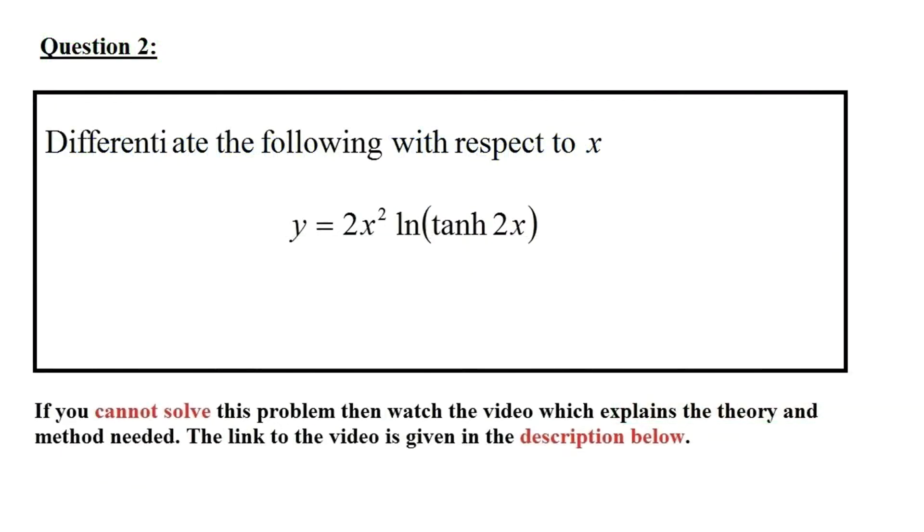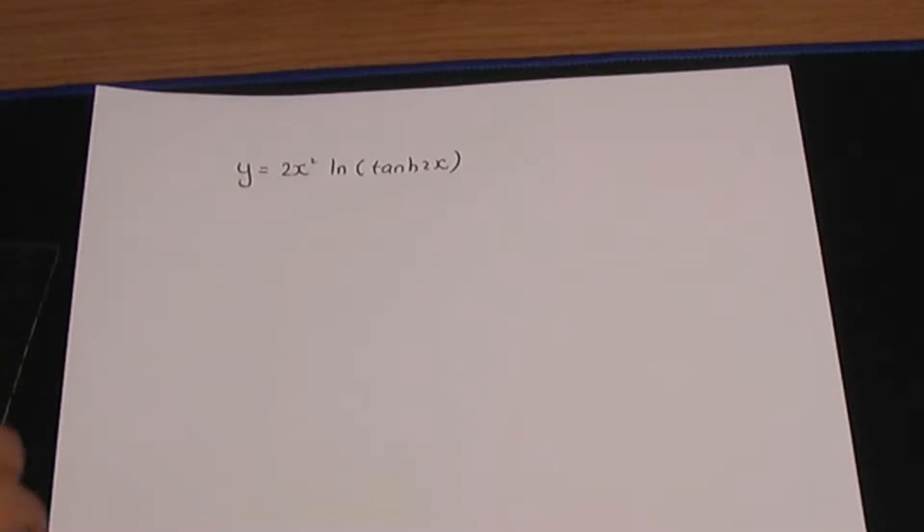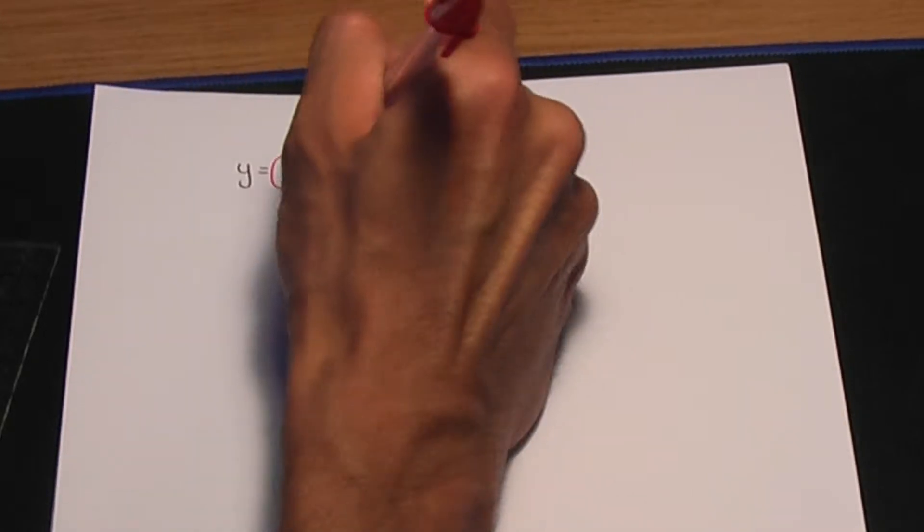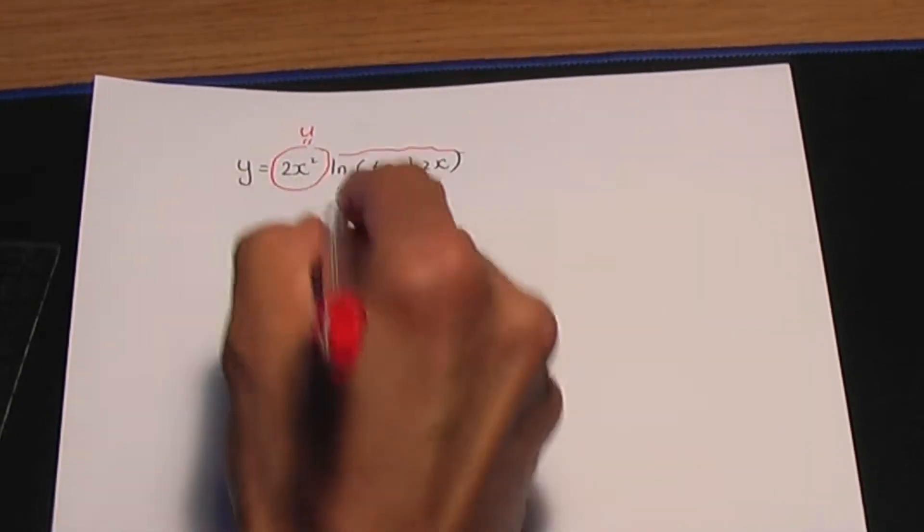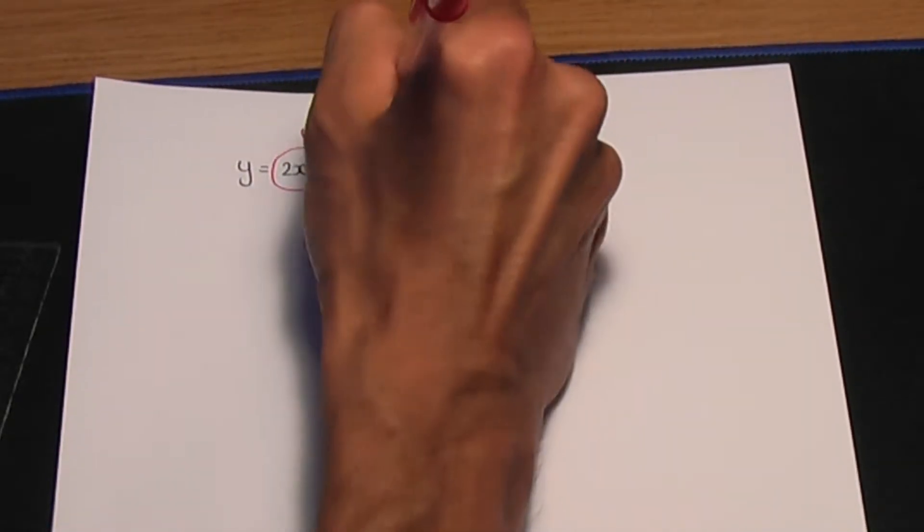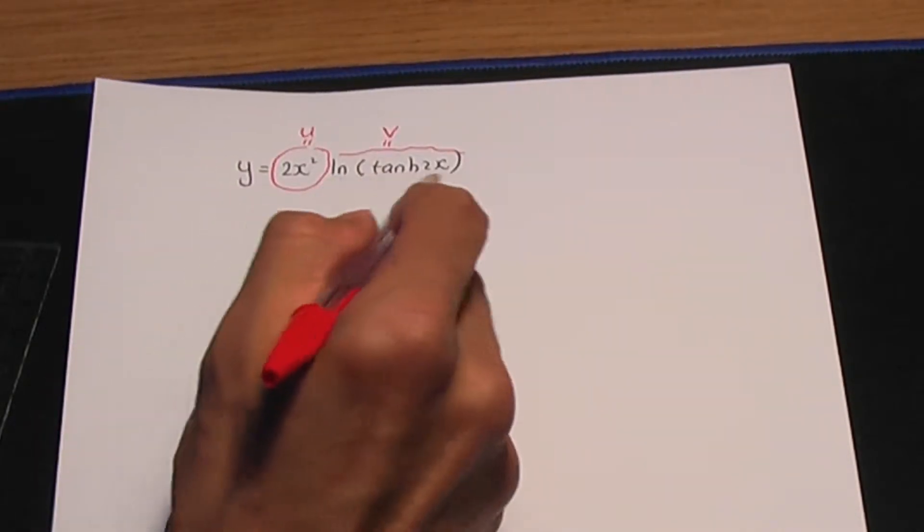So in this case we need to use product rule. I'm going to take this term to be u and the remaining term ln hyperbolic tan 2x to be v. So all of this is one term.